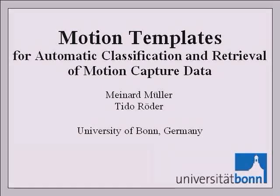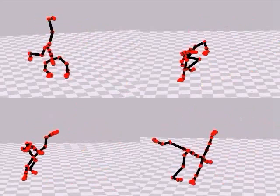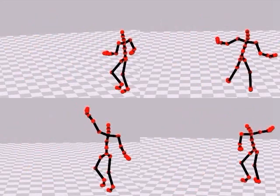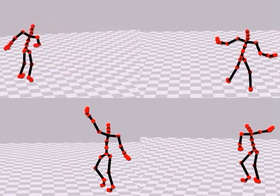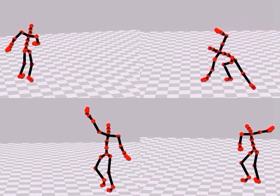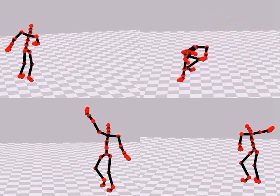In view of motion reuse, automatic annotation and retrieval of motion capture data is an important task in computer animation. As these four cartwheels show, there can be significant spatial and temporal variations for motions belonging to the same motion class.